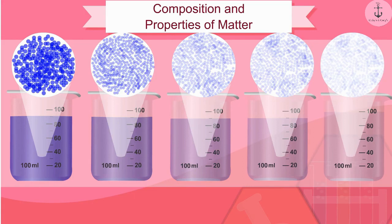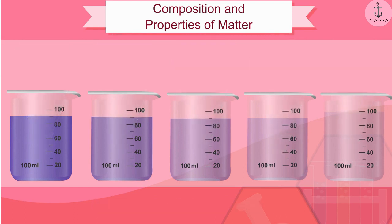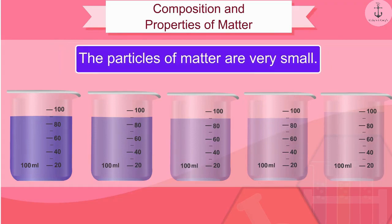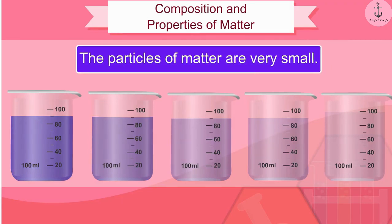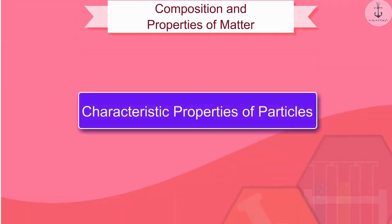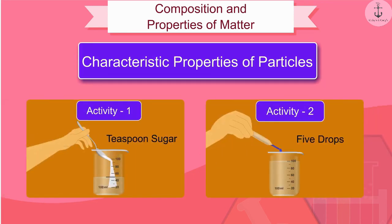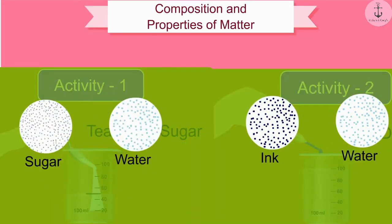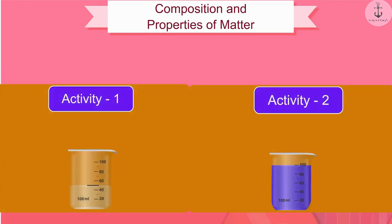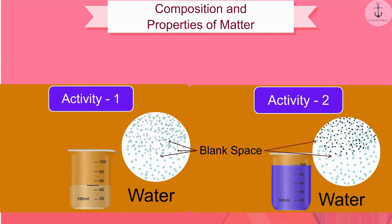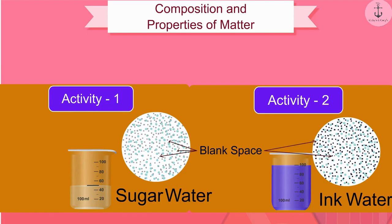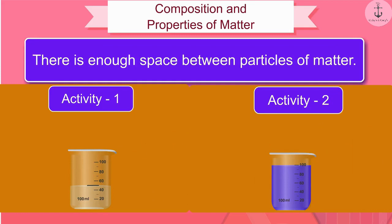Ultimately, in a situation, it cannot be divided into particles and small parts. By this activity, we can say that the particles of matter are very small. Let us now learn about the characteristic properties of these particles of matter. In activities 1 and 2, we saw how the sugar and ink particles were evenly distributed in water. This is possible because particles of one matter are incorporated into the spaces of particles of another matter. It shows that there is enough space between particles of matter.